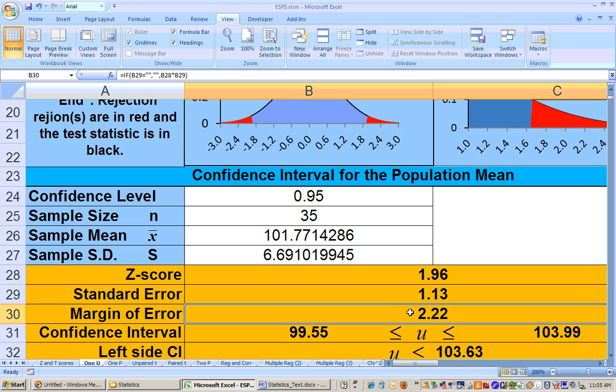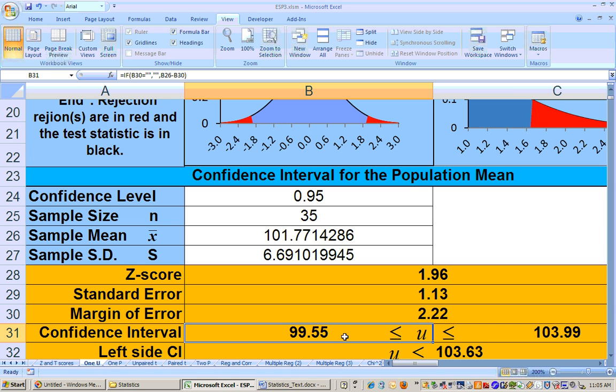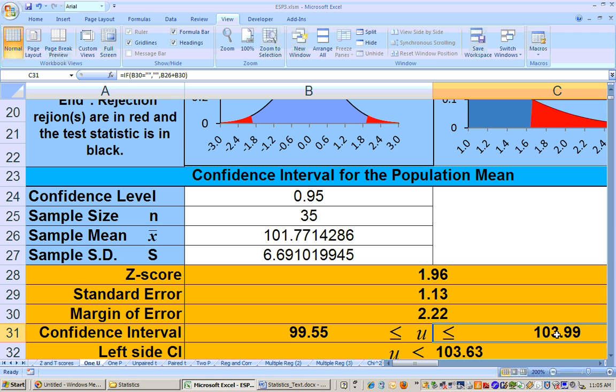To get your confidence interval, you take your point estimate, which for us is our sample mean, and you add on and subtract off your margin of error. If we take 101.77 and subtract off 2.22, we get 99.55. And if we take 101.77 and add on 2.22, we get 103.99.